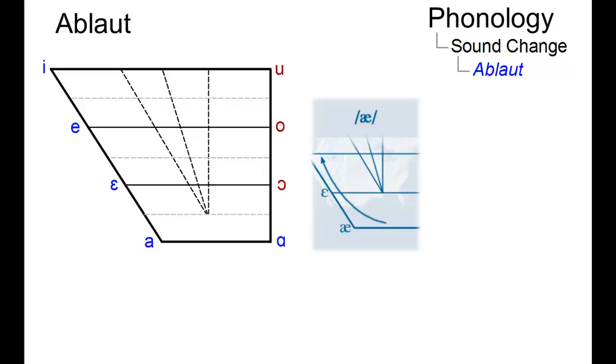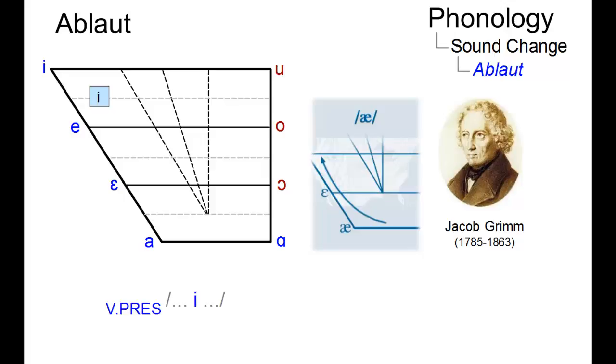The term Ablaut was coined in the 19th century by Jacob Grimm, and it denotes a root vowel change that gives a word a new grammatical function. For example, verbs in their present tense form that exhibit the vowel e could be turned into their past tense form by a change from e to a.